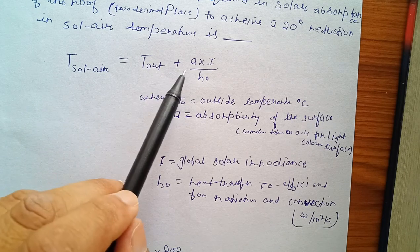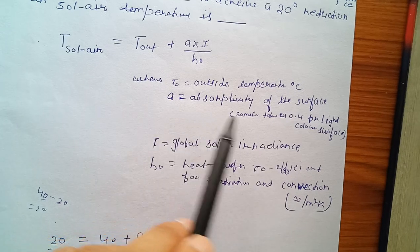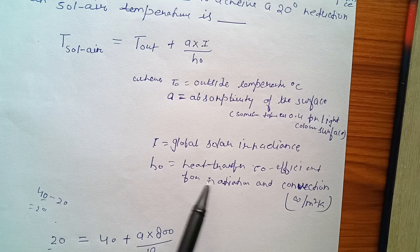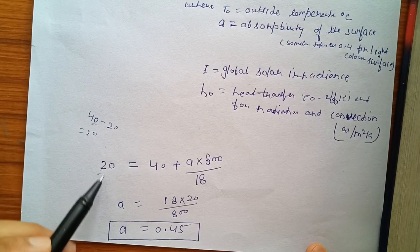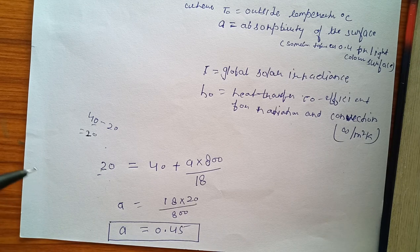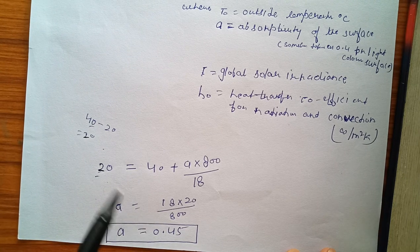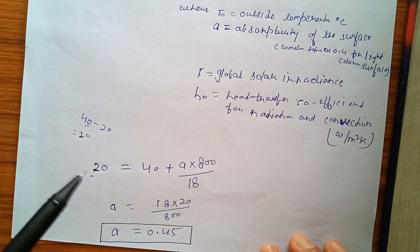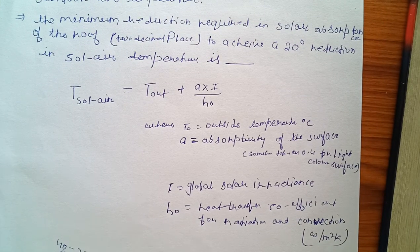Simply we use the formula T solar-air equals T outside plus alpha times I over h naught. Here the values: T outside is outdoor temperature, alpha is absorptivity of the surface, I is global solar irradiance, h naught is heat transfer coefficient for radiation and convection. Putting the values we get T solar-air. 20 is given or we get it by calculating from the outdoor air temperature. In this question there was also a mistake, so we assume 20 here as T solar-air from the question. Given 20 equals 40 plus, then we calculate alpha. So the formula is this.